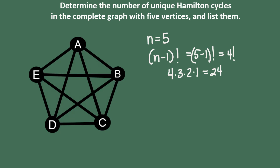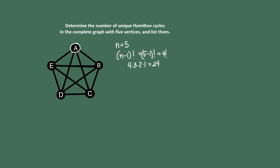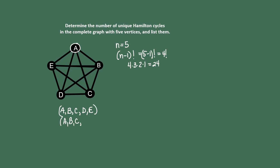We're going to take the same organized approach to listing them, starting with one vertex — vertex A — because it's easiest to keep everything in alphabetical order. We're going to start always with vertex A, and first list all cycles that go to B. So A→B→C→D→E is one cycle. Next, keeping A, B, C in the same order, what if instead of going to D we go to E first, then D? That gives us A→B→C→E→D→A.